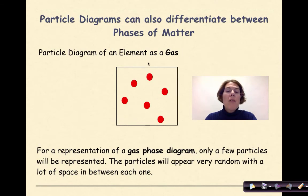Now we have the particle diagram of an element as a gas. Notice here, for a representation of a gas phase diagram, only a few particles will be represented because we're assuming that the rest of the particles that we saw in the previous diagram are now out of our box, out of the picture. The particles will appear very random with a lot of space in between each one. So again, this is our representation of a phase diagram representing gases.